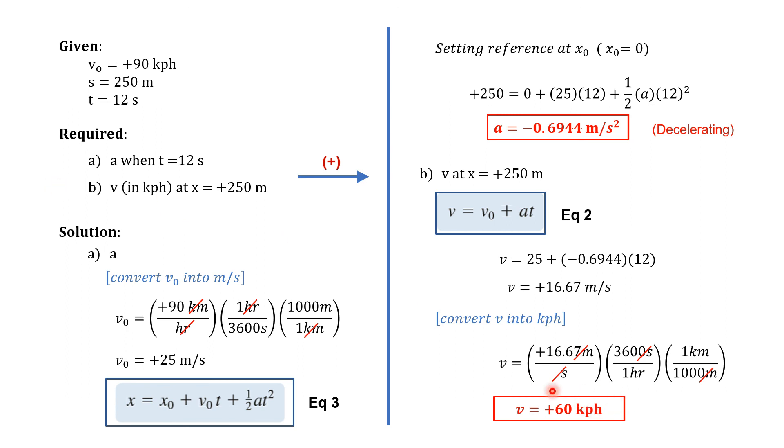So that means in your final answer, you may not include the sign because for speed, what you need is just the magnitude of final velocity. So you can answer that the final speed is equal to 60 kph.